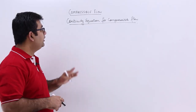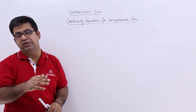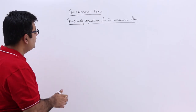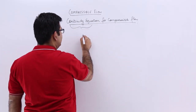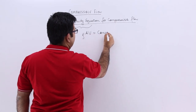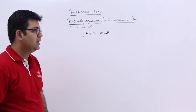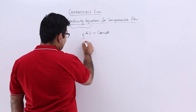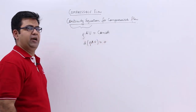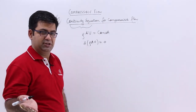We will first of all look at the continuity equation for the compressible flow, because till now we have seen the equation for an incompressible flow. The continuity equation says that the mass flow rate is a constant value. So if I say this in differential form, the change of the mass flow rate happening through a section — or in between two sections — is zero.